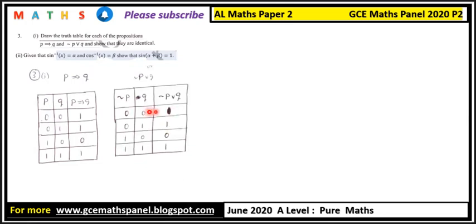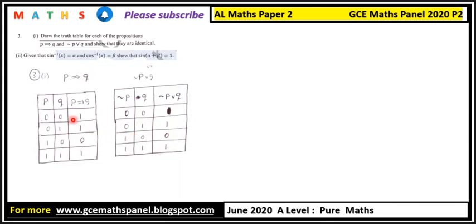Negation of zero is one, so one or zero gives us one. Negation of zero is one, so one or one gives us one. Negation of one is zero, so zero or zero gives us zero. Negation of one is zero, so zero or one gives us one. As mentioned, the OR statement is only false when both are false.